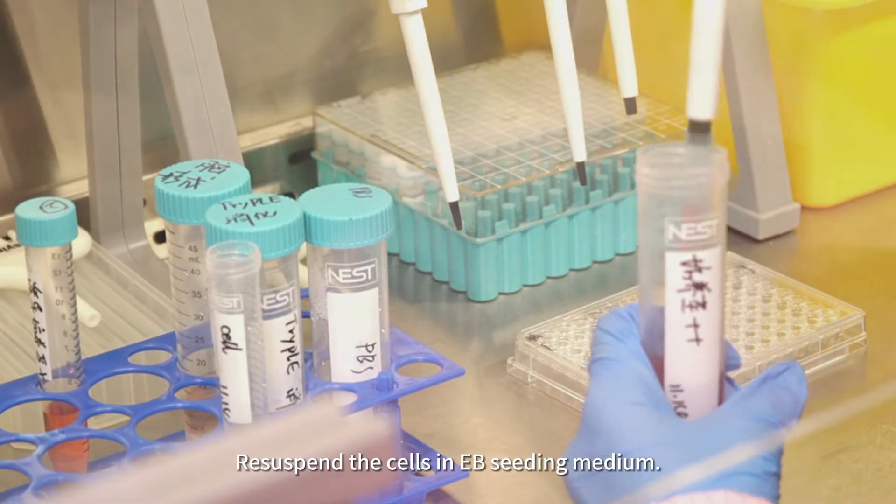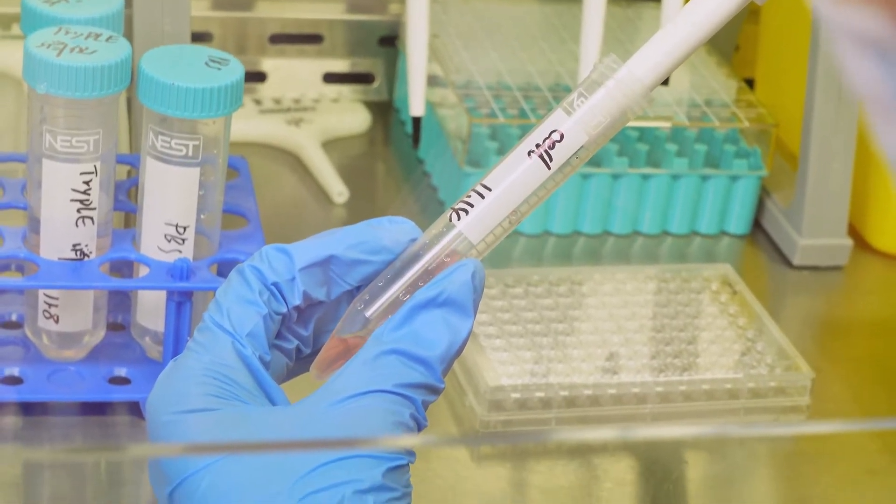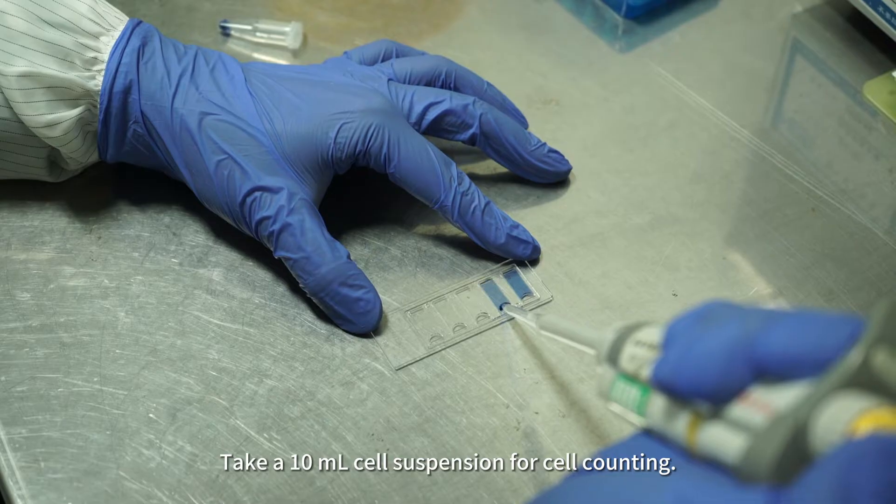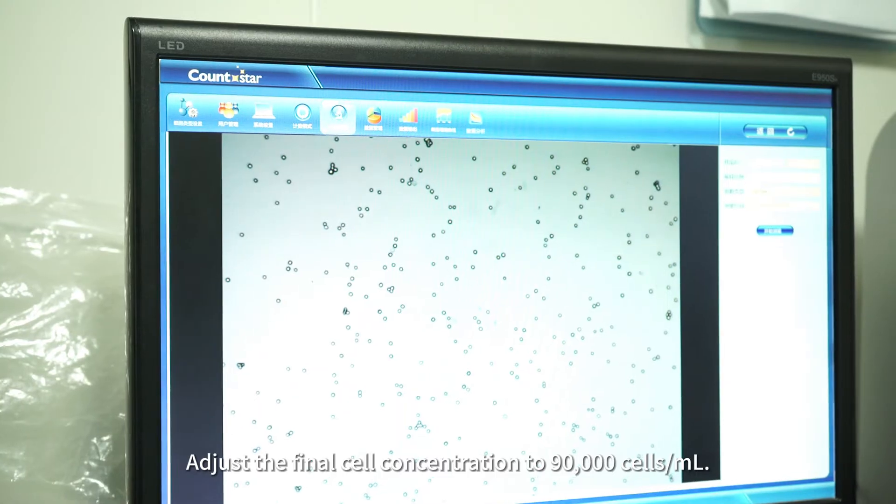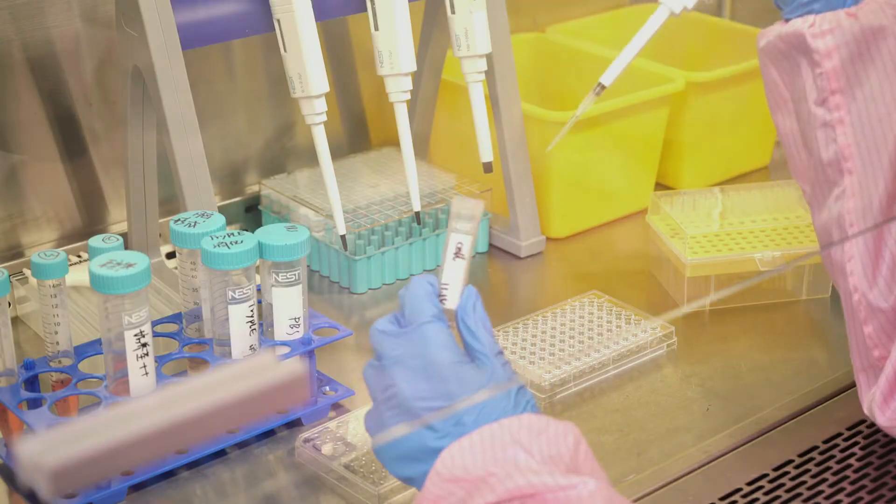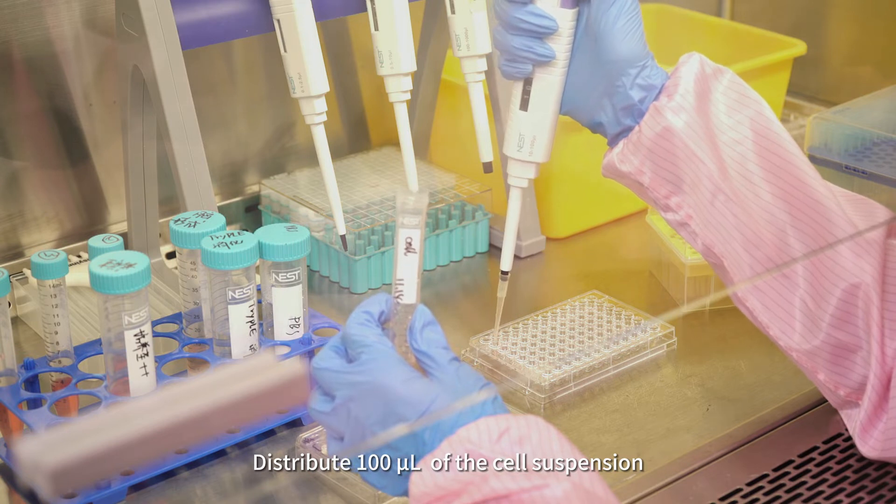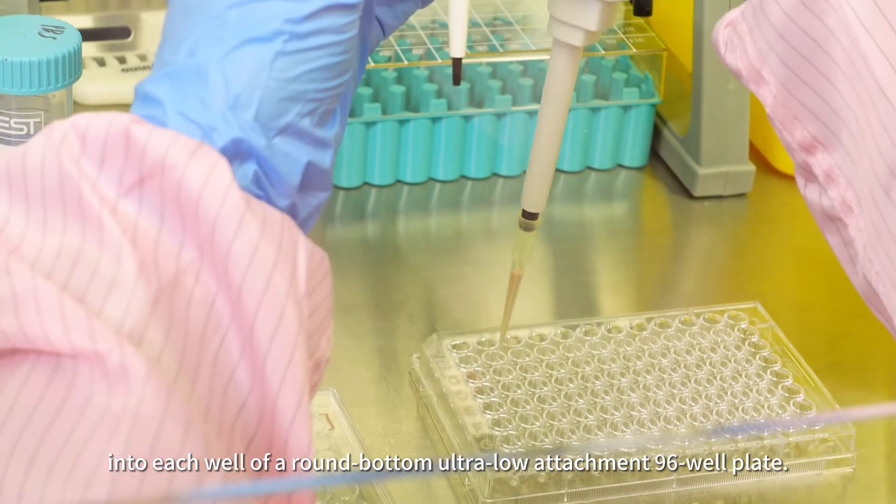Resuspend the cells in EB seeding medium. Take a 10-microliter cell suspension for cell counting. Adjust the final cell concentration to 90,000 cells per milliliter. Distribute 100 microliters of the cell suspension into each well of a round-bottom ultra-low attachment 96-well plate.